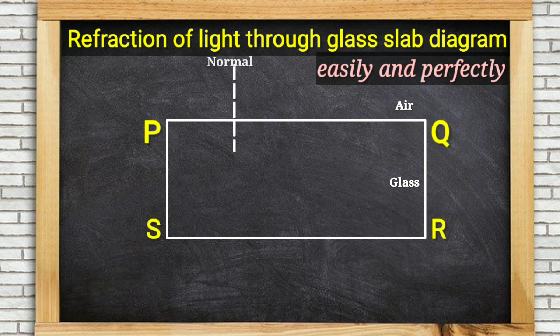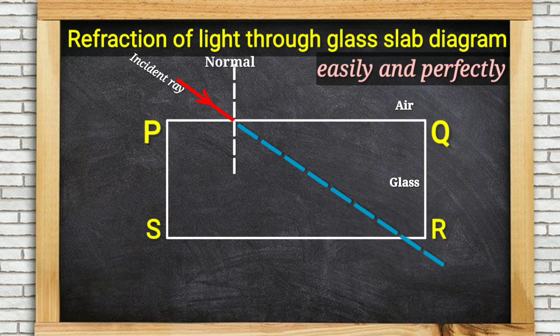We will draw a dotted line which represents direction of incident ray. Next we should draw refracted ray but we won't do that. We will first draw emergent ray parallel to original direction of the incident ray.